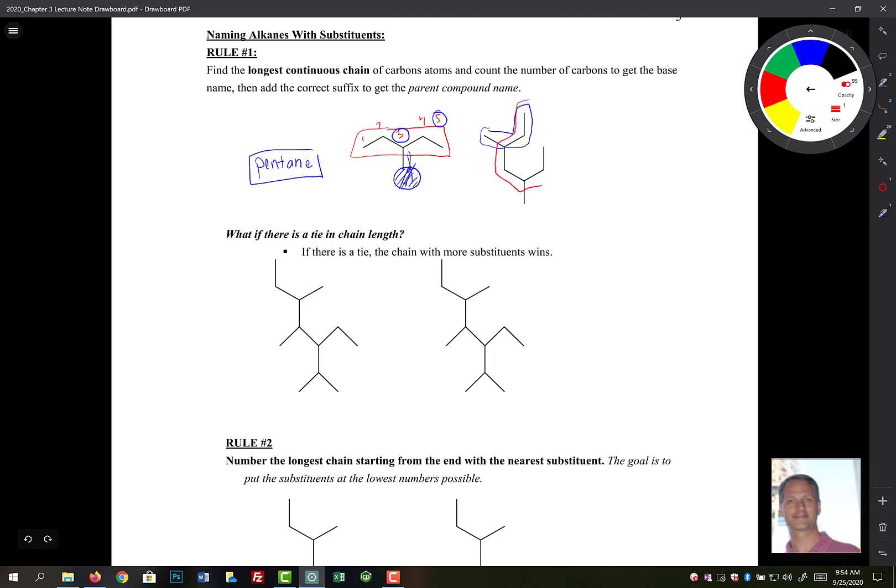Our longest carbon chain starts up here at the top, comes down, comes over, down this direction, up and over like that. So that is our longest carbon chain. Counting them up, we have one carbon, two, three, four, five, six, seven.